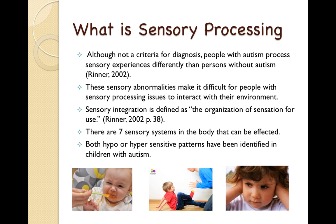What is sensory processing? Although not a criteria for diagnosis, people with autism process sensory experiences differently than persons without autism. The DSM-5 does now identify hyper or hypo reactivity to sensory input or unusual interests in sensory aspects of the environment as criteria under the restrictive repetitive patterns of behavior criteria. These sensory abnormalities make it difficult for people with sensory processing issues to interact with their environment. These sensory issues are more extreme than a child who is a picky eater or someone who just can't listen to country music.